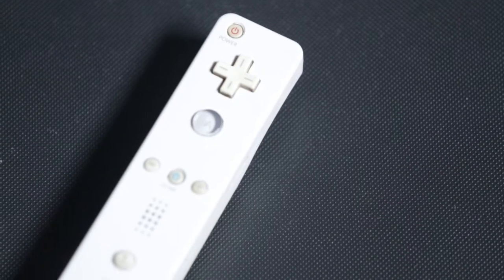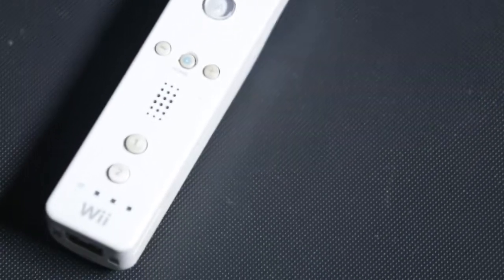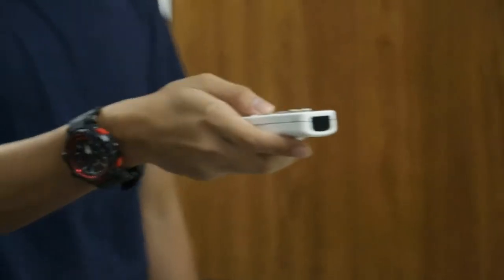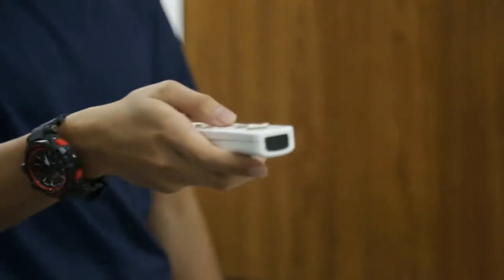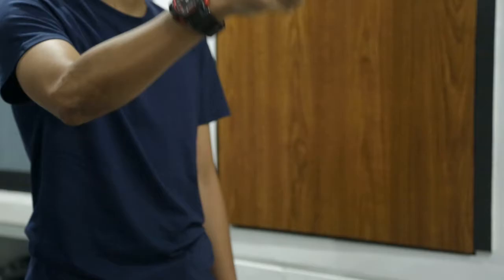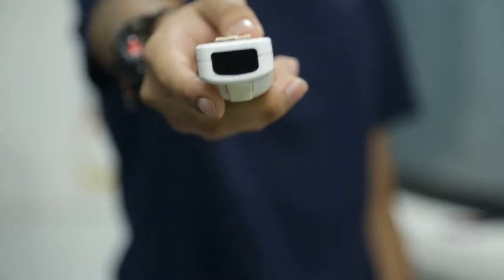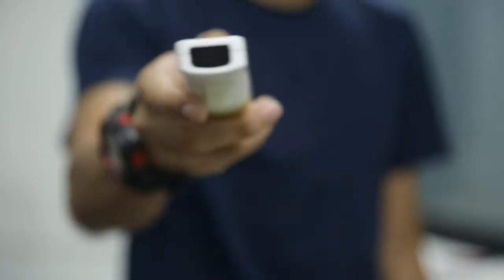The Wii makes use of a pivotal accelerometer that can sense movements on the X-axis for side-to-side movements, Y-axis for up and down movements, and the Z-axis for front-to-back movements.